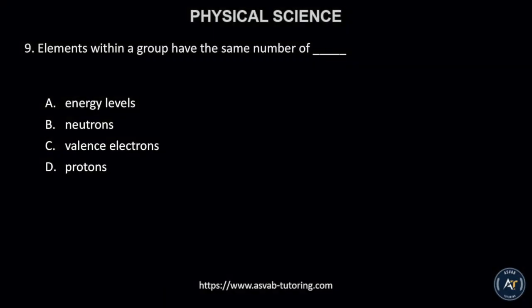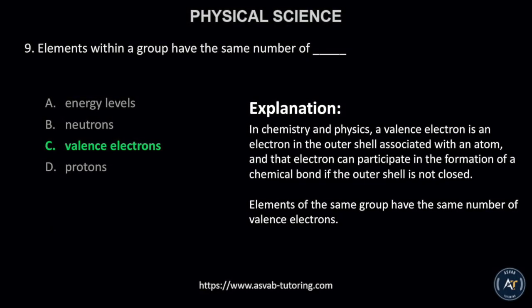Number 9. Elements within a group have the same number of A. Energy levels, B. Neutrons, C. Valence electrons, or D. Protons. The correct answer is C. Valence electrons.